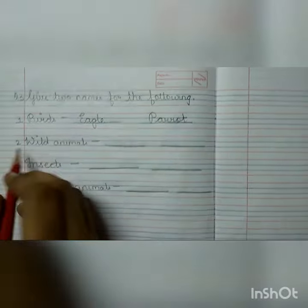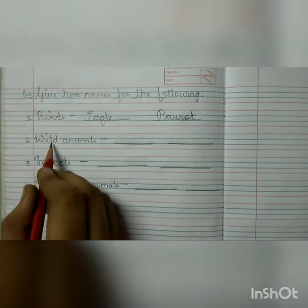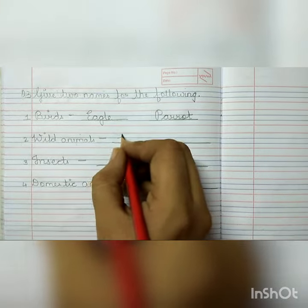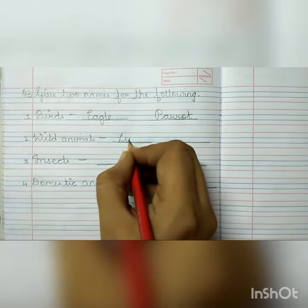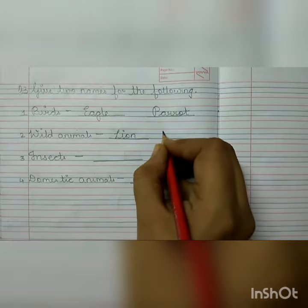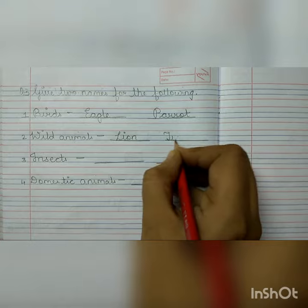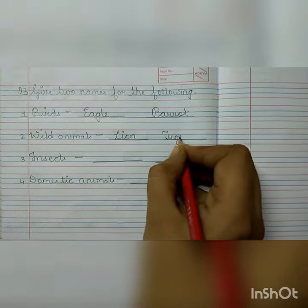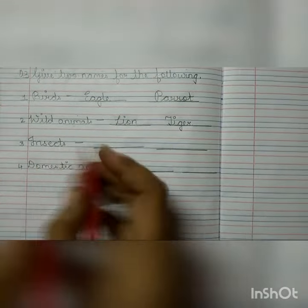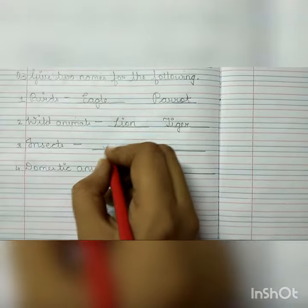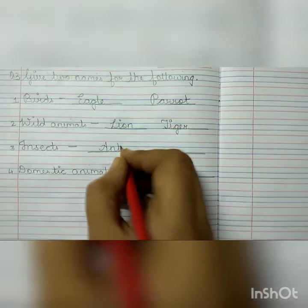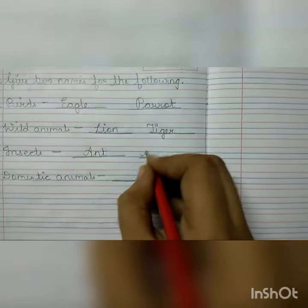Number 2: Wild animals. Write lion and tiger. Number 3: Insects. Write ant and cockroach.